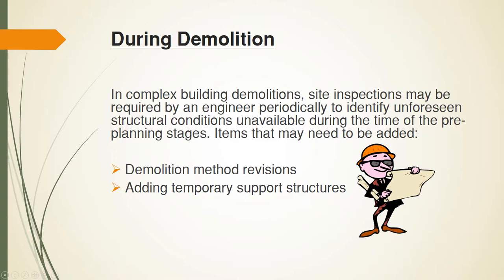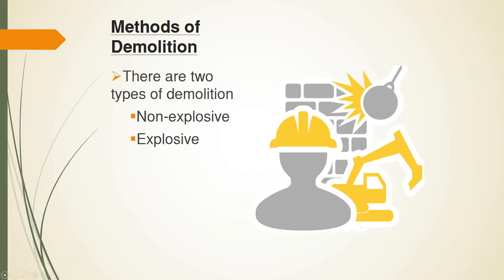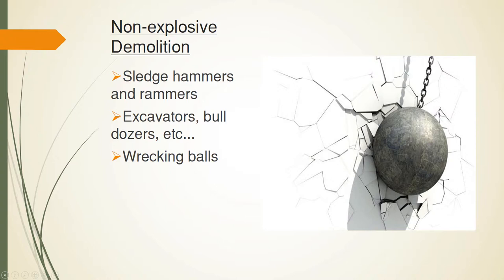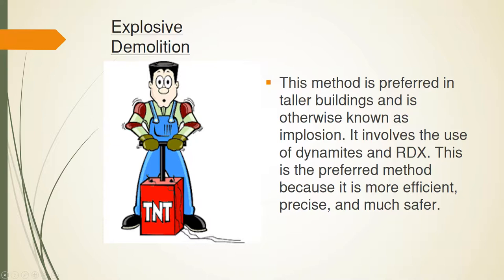Items that may need to be addressed include demolition method revisions or adding temporary support structures. There are two types of demolitions to consider: non-explosive and explosive. Non-explosive demolitions consist of sledgehammers, rammers, bulldozers, and wrecking balls. Explosive demolitions involve dynamites and RDX, and are otherwise known as implosion. This method is used in taller buildings and is preferred due to its efficiency and precision. It is actually considered safer because it limits on-site personnel's exposure to high-level hazards.